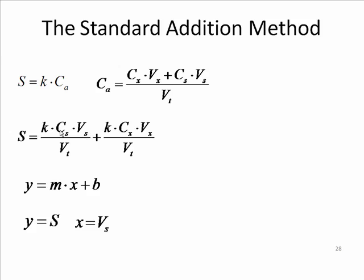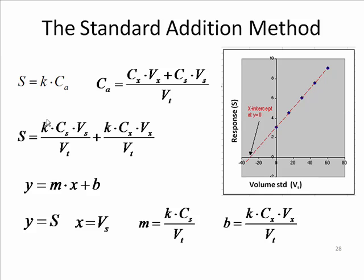These three things, the k, the c sub s, and v total, they're all constants. That's just, we take these constants, pool them together. That's just a constant, which seems like a slope factor.